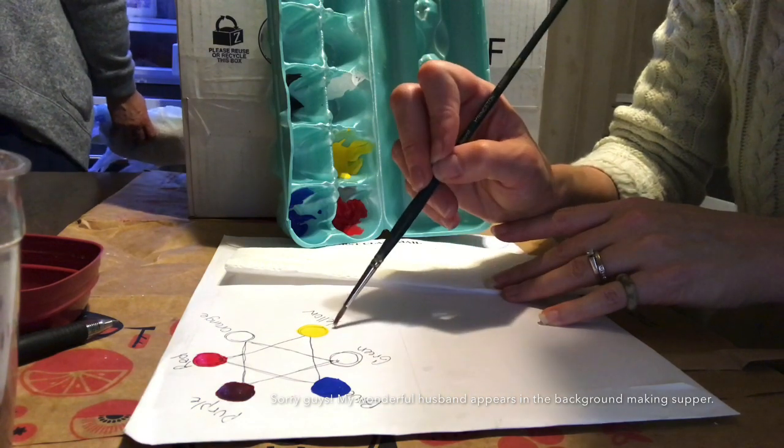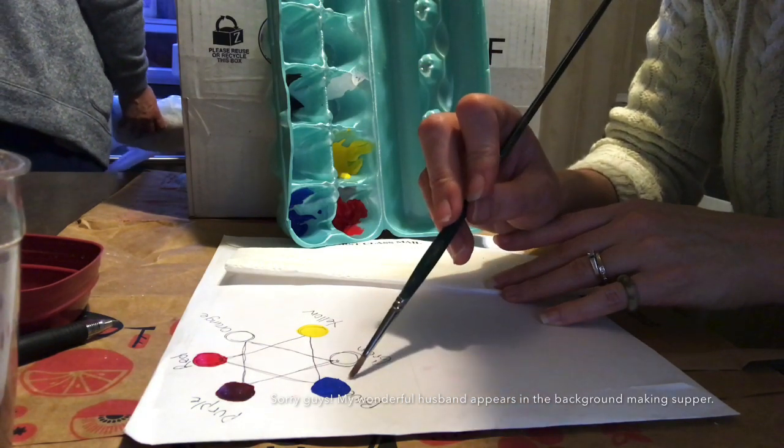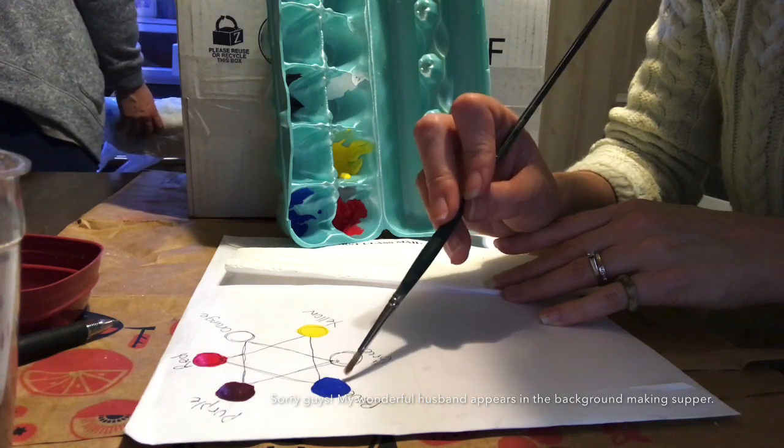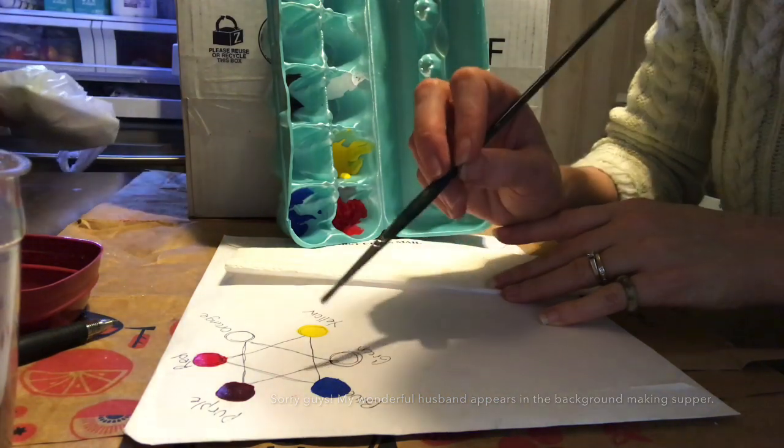For yellow and blue, blue is going to be much stronger than yellow. So I'm going to start with the yellow and add a tiny bit of blue to get a nice green.